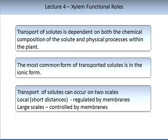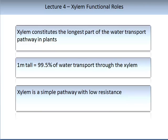Transport of solutes can occur on two scales: local or short-distance transport, which tends to be regulated by membranes, and larger-scale, longer-distance transport, also controlled by membranes. The xylem constitutes the longest part of the water transport pathway in many plants. For example, in a one-metre tall plant, about 99.5% of water transport is through the xylem, and this percentage increases as the tree or plant grows taller.